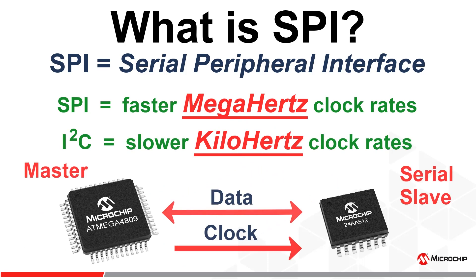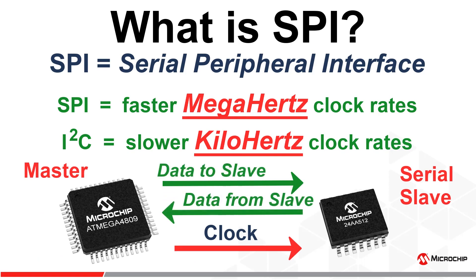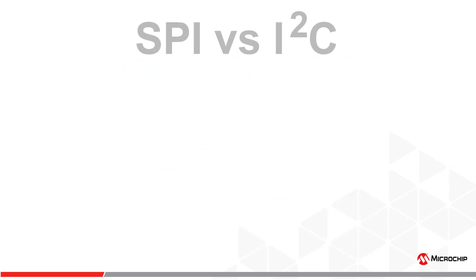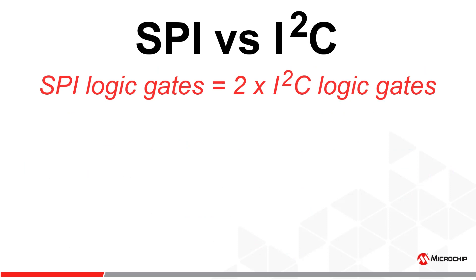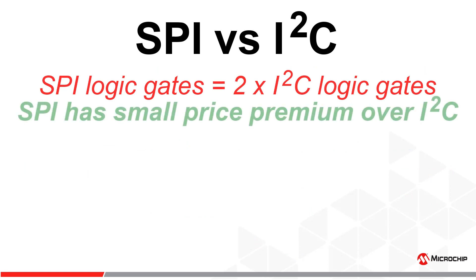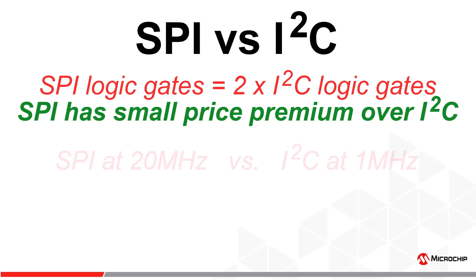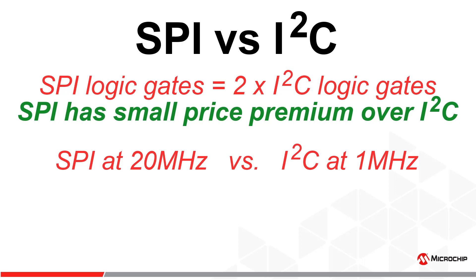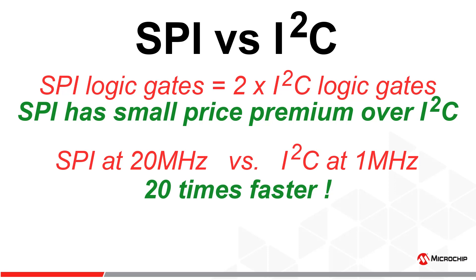To gain that throughput speed, an additional signal was needed to isolate data to and from the host. Because of this, about twice as many logic gates are needed to implement SPI over I2C, which means that SPI devices will have a slight price premium over I2C devices. Many low-cost SPI devices offer up to 20 MHz clock frequencies, which is a 20 times improvement when compared to most I2C devices.